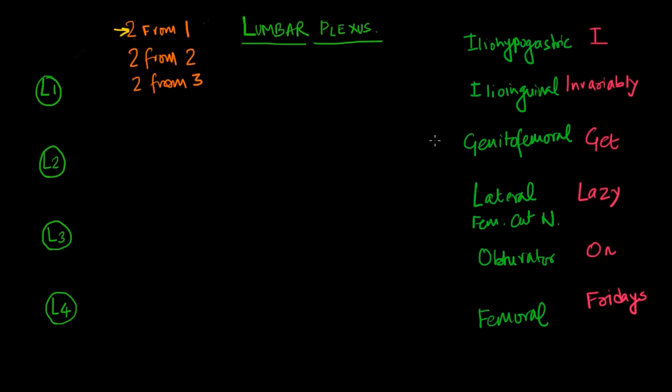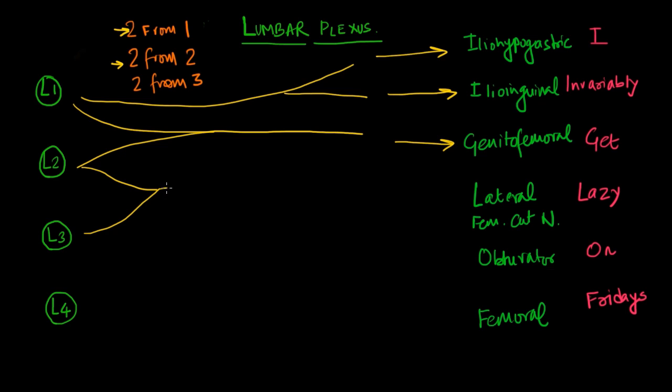So the first double which comes from a single nerve root is the iliohypogastric and ilioinguinal nerve, both of them coming from the L1 nerve root. Next L1 and L2 combine to give origin to the genitofemoral nerve. Next L2 and L3 combine to give origin to the lateral femoral cutaneous nerve.